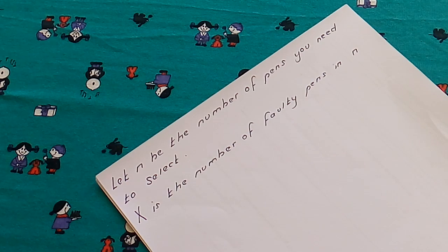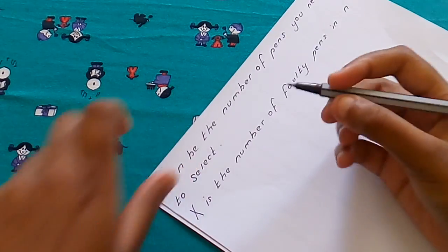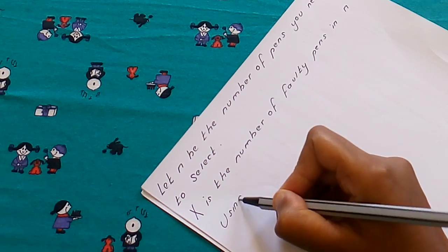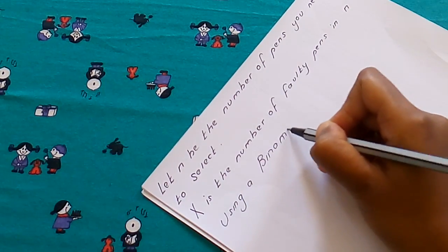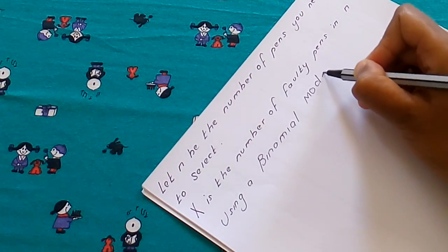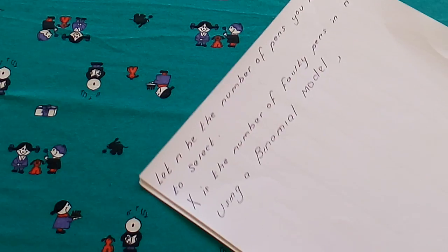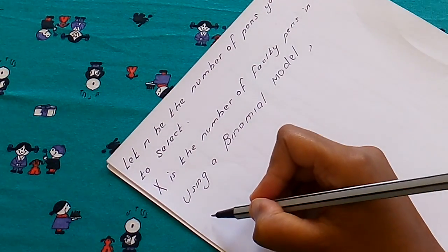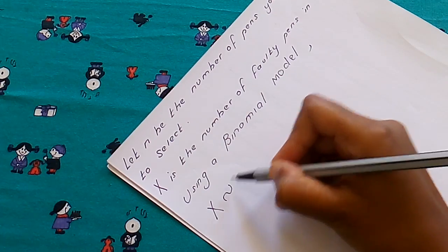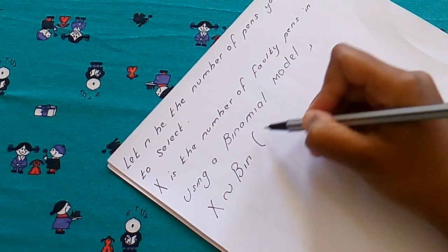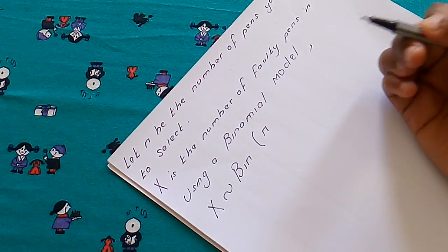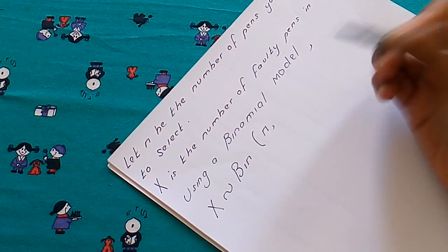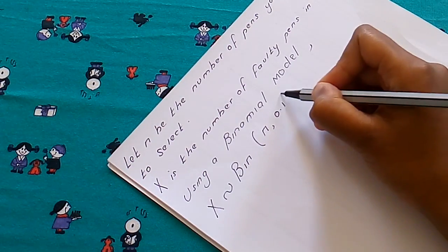X, capital X is the number of faulty pens. Now assuming independence and using a binomial model we can write X follows Bin(n, p). So we're going to write the n itself since we do not know the value, and p. Now we have the value which is 0.1.